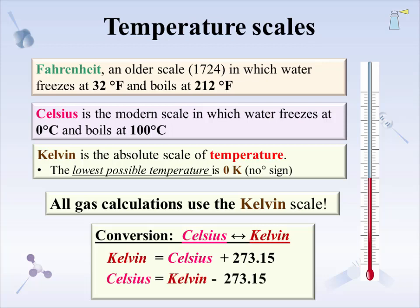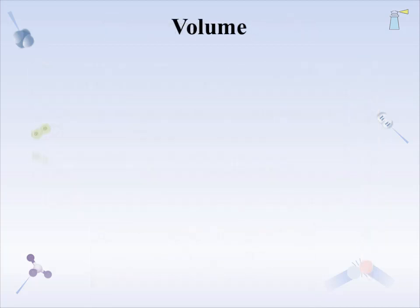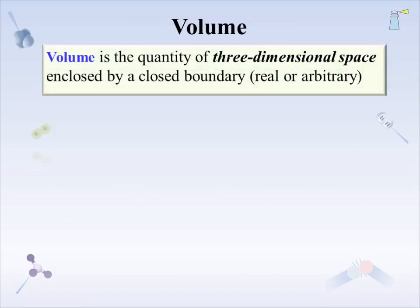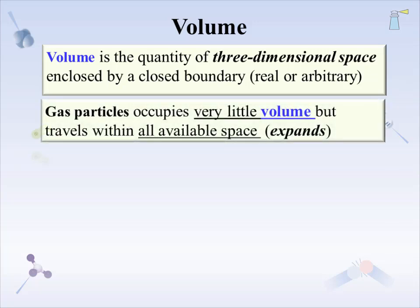The next property is the well-known quantity, volume. Volume is the quantity of three-dimensional space enclosed by a boundary, which can be real or arbitrary. The volume of a gas is not the volume of the gas particles, but rather the volume available to the particles as they zip around in random motion. Within any volume, gas particles occupy very little of the available space, but travel within all available space. Gas expands to fill the volume containing it. Per the KMT, the volume of particles is essentially zero, so any discussion of volume refers to the available space.